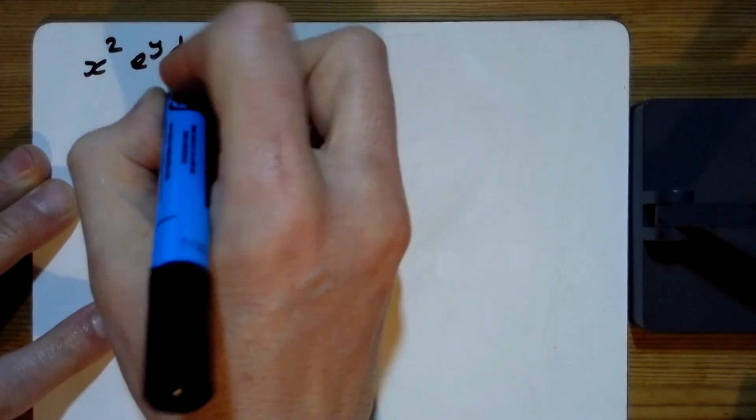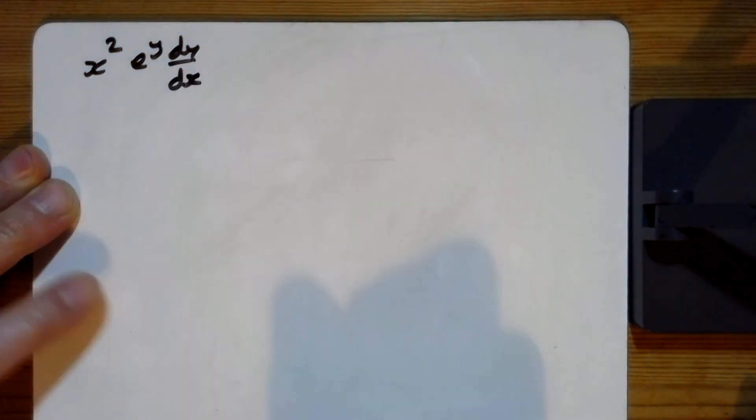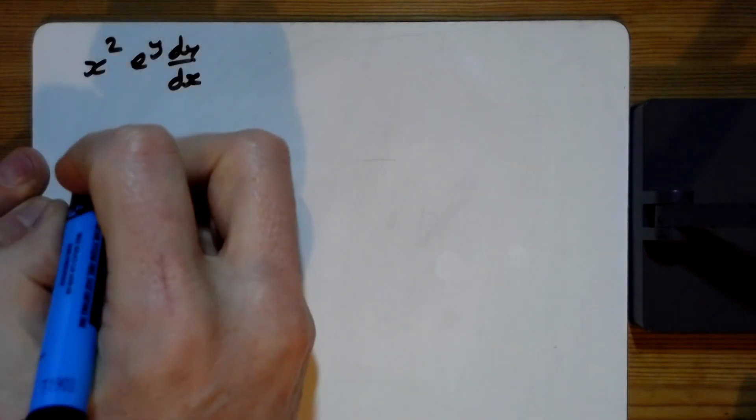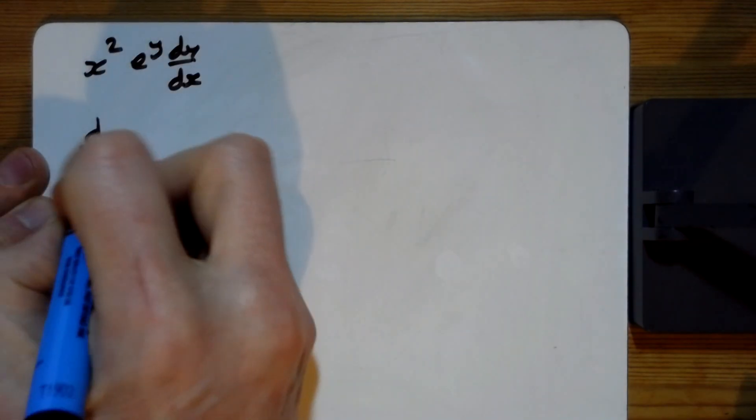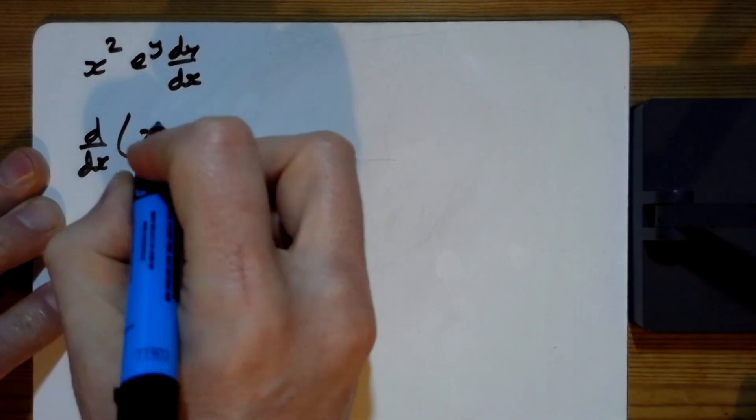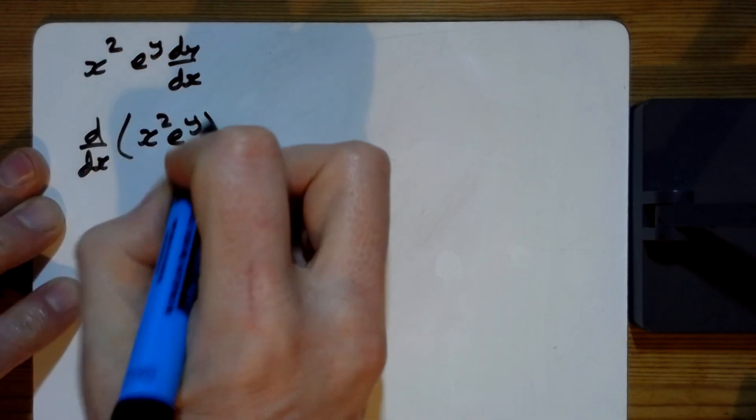For e, we've got x squared e to the y dy by dx. So I'm thinking I'm going to be differentiating, I mean my guess is I'm going to be differentiating x squared times by e to the y.